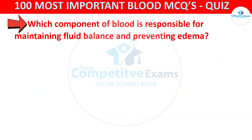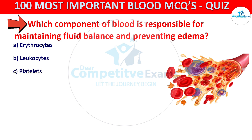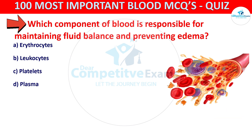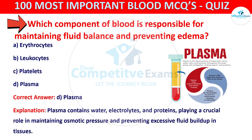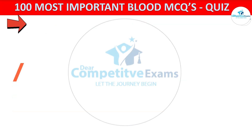Which component of blood is responsible for maintaining fluid balance and preventing edema? Your options are Erythrocytes, Leukocytes, Platelets, or Plasma. The correct answer is D, that is Plasma. Plasma contains water, electrolytes, and proteins, playing a crucial role in maintaining osmotic pressure and preventing excessive fluid buildup in tissues.